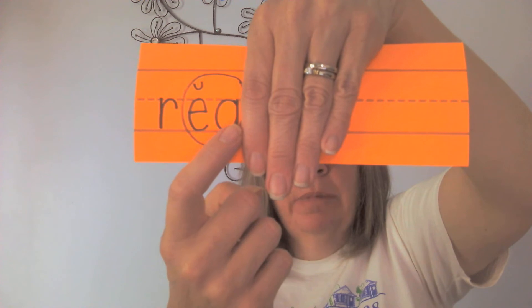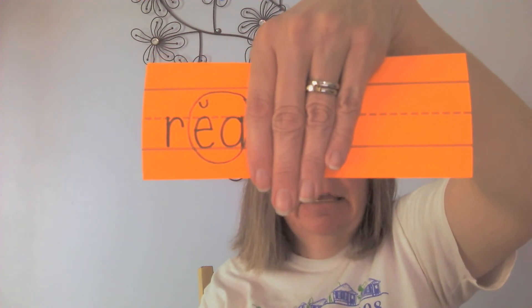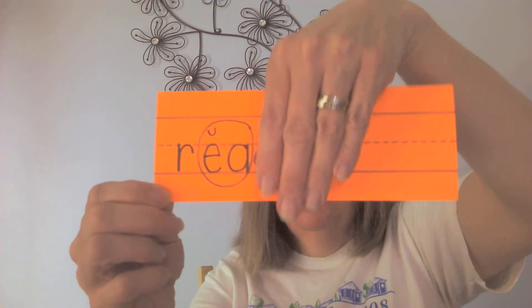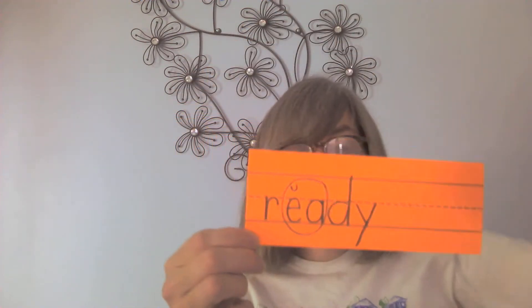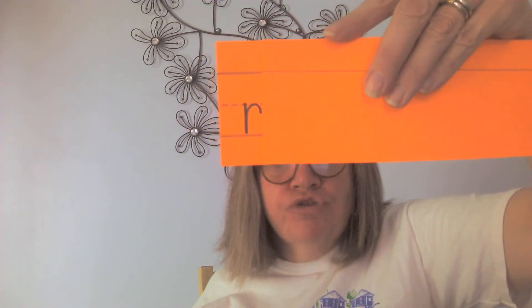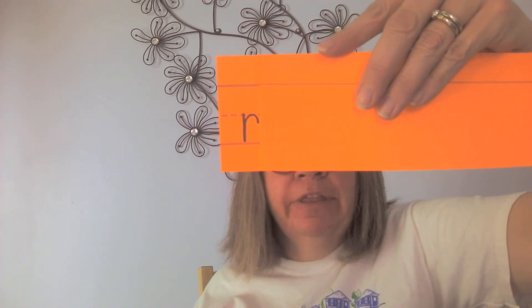Let's cover up the D. Now all we can see is R, E, A — we have to remember the D part. Ready? R, E, A, D, Y. Now I'm going to cover up that whole section and use this card. All that's left is R — you have to remember what says /ā/, which is E-A, then remember the D and Y on the end. Let's try it: R, E, A, D, Y. Did you get it?